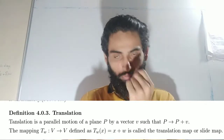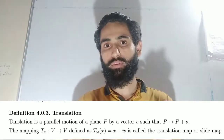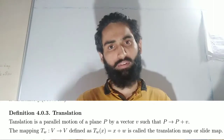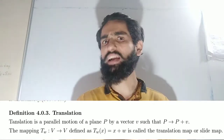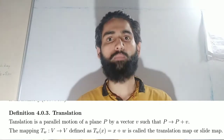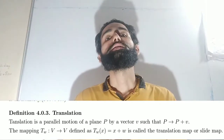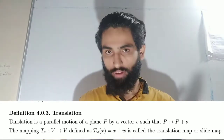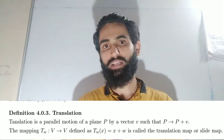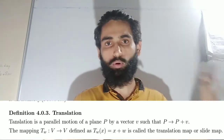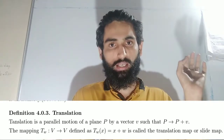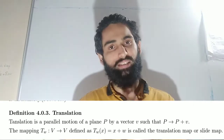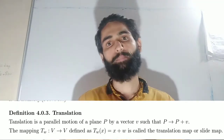More precisely, the translation map is a function t_w, for a fixed element w inside V. t_w maps V to V, where V is a finite-dimensional inner product space over ℝ, defined as t_w(x) = x + w. That means in every element we are just adding a fixed vector w. This map is called a translation map or a slide map.